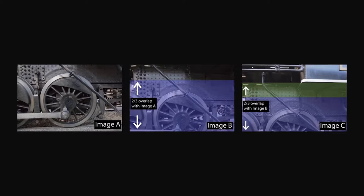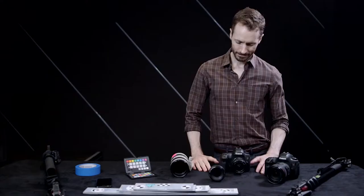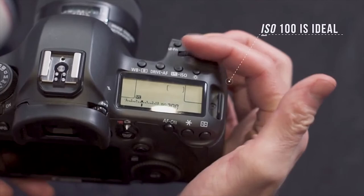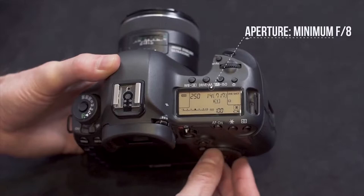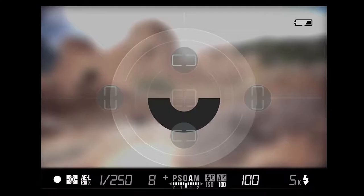Now, onto the camera settings. It is important to remember that good exposure and sharp images are key. The ISO needs to be as low as possible, ideally 100, and for aperture, a minimum of f8. If you have to sacrifice one of your settings, it should be your ISO, because it is most important to keep sharp focus and a high depth of field in order to get the best results for the 3D solve.